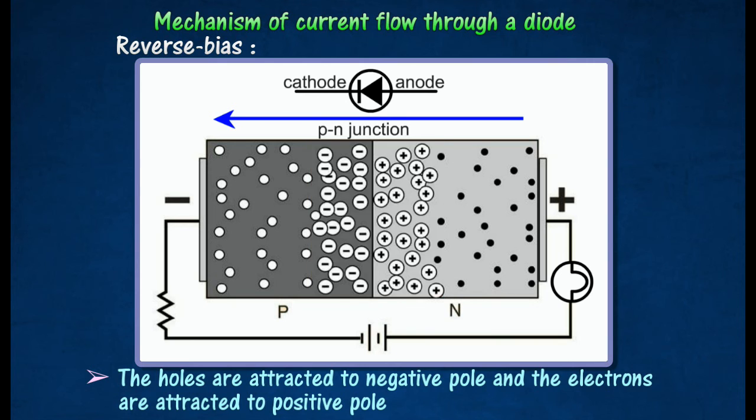Thus, the depletion layer is widened so that the barrier potential difference increases until its value almost equals the battery voltage, preventing current from flowing across the junction. As a result, the bulb does not light up.